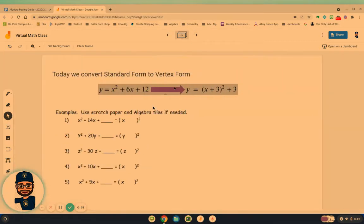So yesterday we worked on problems like this, where we were trying to complete this square by using algebra tiles if needed. The goal is to take this standard form where we're given the y-intercept of 12, and convert it over to vertex form so that we can find the vertex.